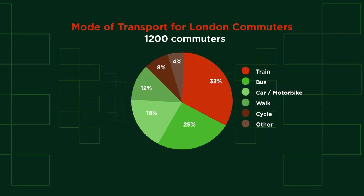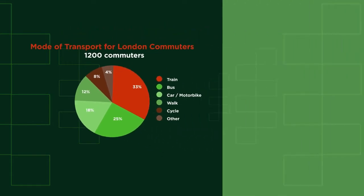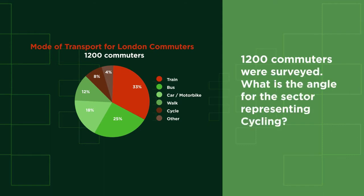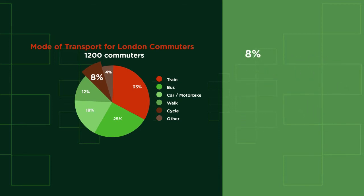And then they ask us to find what this represents. So we know that 25% of the 1200 travelled by bus, so we just need to find 25% of 1200, which is 300 people. Or they could even ask us what angle a sector represents. The cycling sector is 8% of the whole circle, so 8% of 360 is 28.8 degrees.